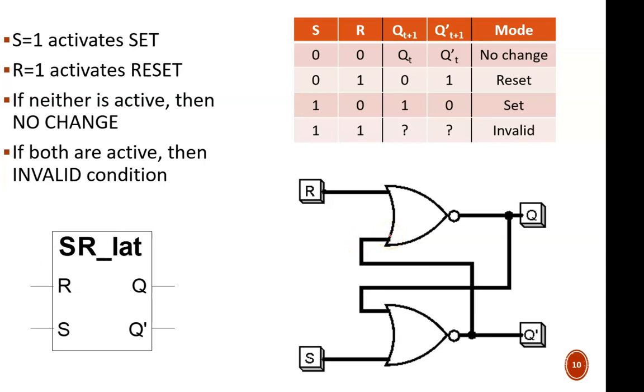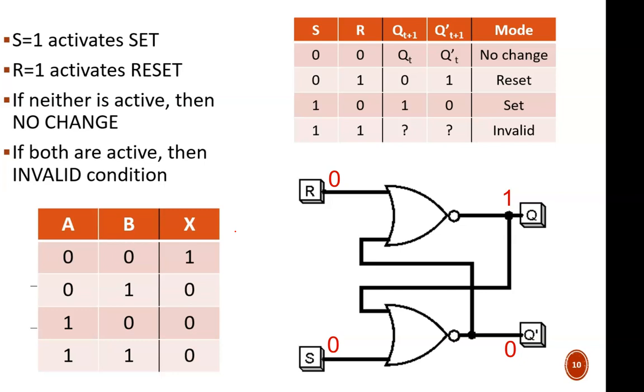Let's look at some example values on this schematic. Let's start with Q equals one, and therefore Q' equals zero, and be in no-change mode, so S equals zero and R equals zero. To help us work with NOR logic, here's the truth table. Notice that the output is high only when both inputs are low.